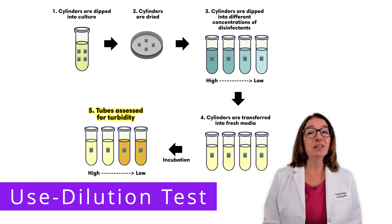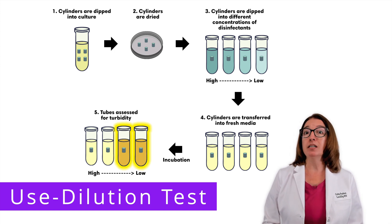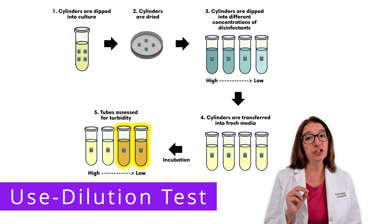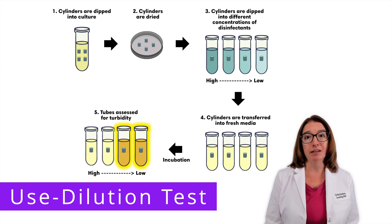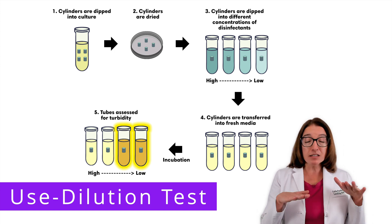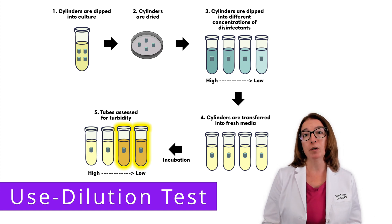As you can see in the image, the right two tubes, which contain cylinders that were dipped into lower concentrations of the disinfectant, are showing turbidity. Therefore, lower concentrations of the disinfectant are not sufficient for inhibiting microbial growth.